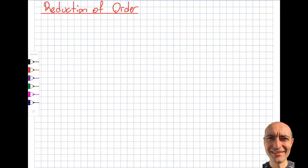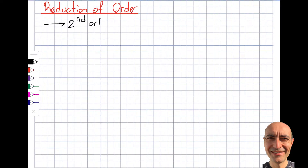Another catch: if I have a differential equation of 8th order, reducing it to 7th order doesn't accomplish much because I still have to deal with a 7th order equation. So from a practical standpoint, this method is only applicable for a second order differential equation. If I have a second order DE and I know one of the solutions, I'll be able to reduce it to first order.